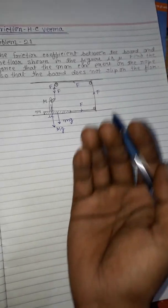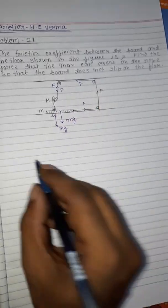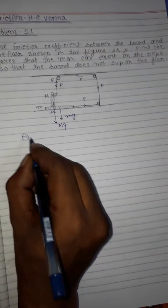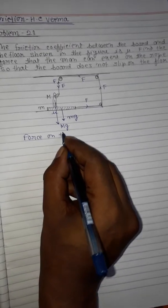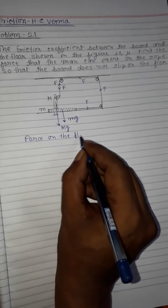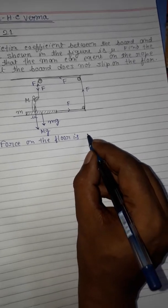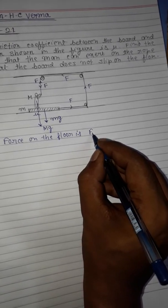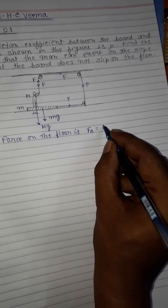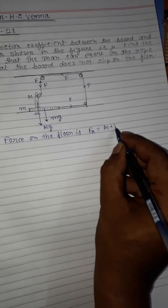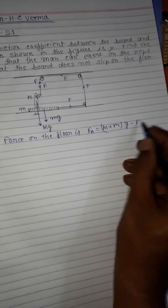So the net downward force on the floor, the resultant force, equals (M + m)g minus F.